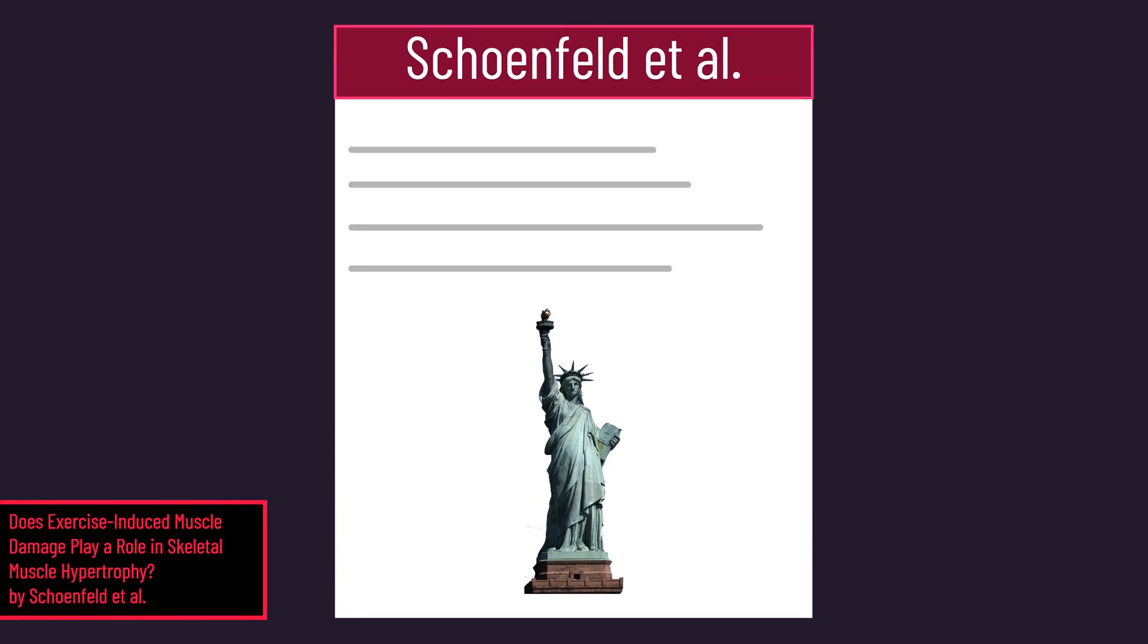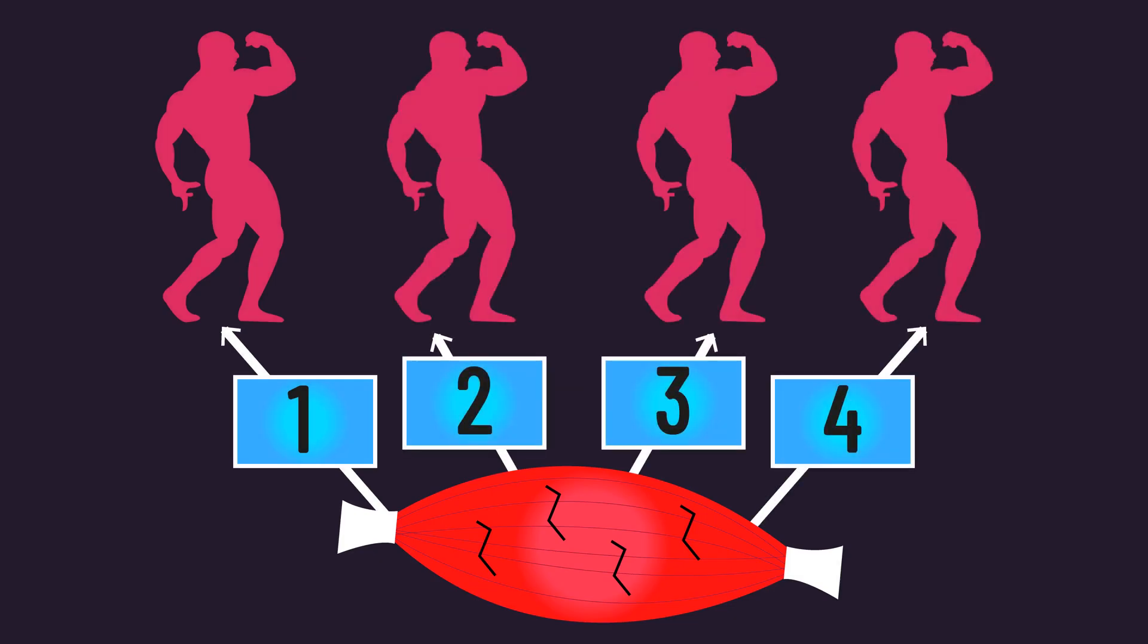In 2012, Brad Schoenfeld from New York, the same researcher who performed a comprehensive review on metabolic stress a year later, published a comprehensive review on muscle damage and hypertrophy. Four paths were noted between damage and gains.